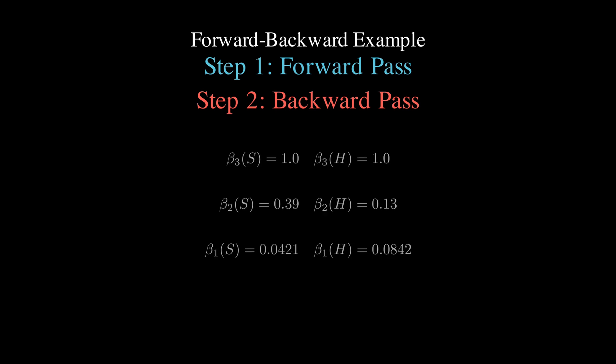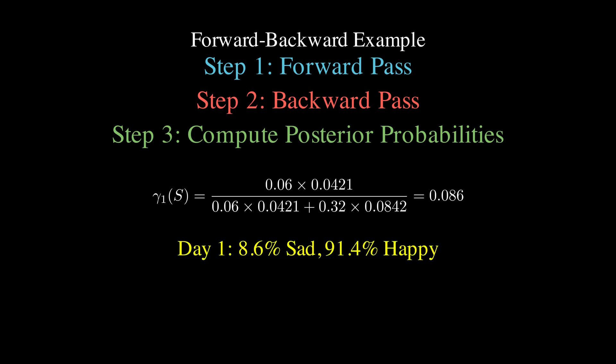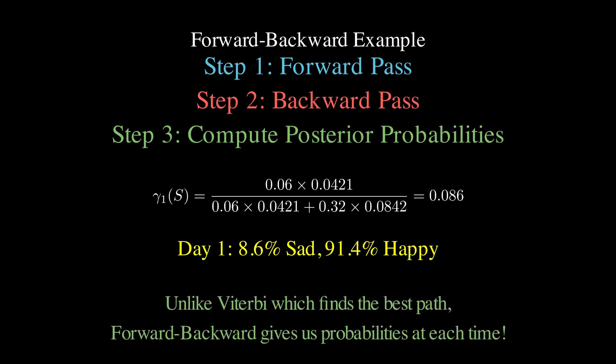Then, when we combine the forward and backward values, we can compute that on day 1, given all 3 days of observations, there is about an 8.6% chance the person was sad and a 91.4% chance they were happy, which makes sense because you observe a red hat and happy people are much more likely to wear red.